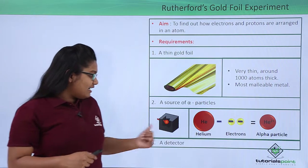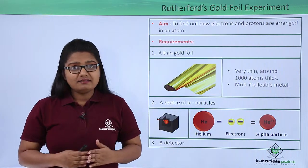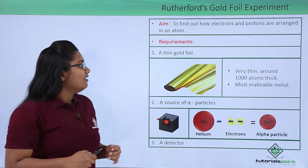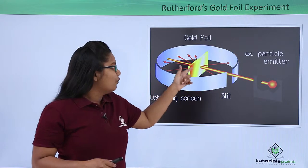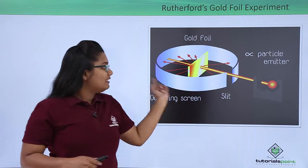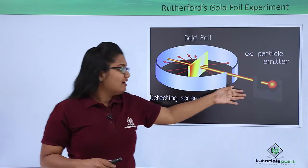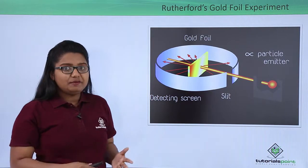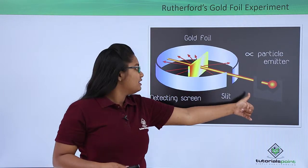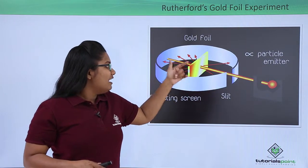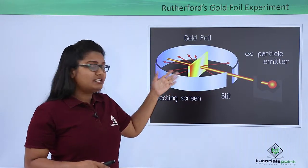The third thing that he took was a detector to detect the alpha particles which strike on it. The setup had a gold foil surrounded by the detector facing the alpha particle emitter. Fast-moving alpha particles from the emitter were shot onto the gold foil, and when they emerged out, they were detected by the detector.